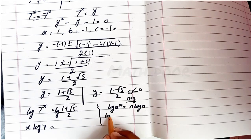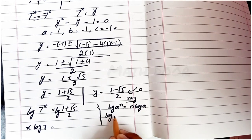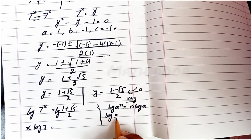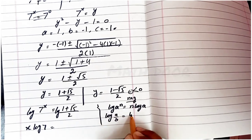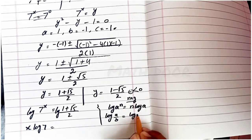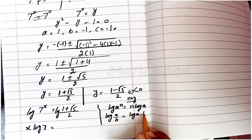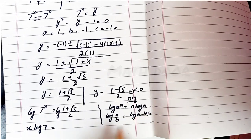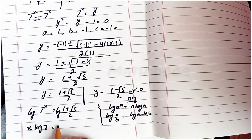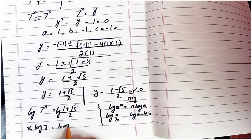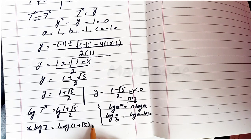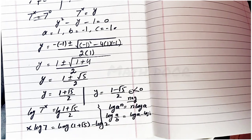We also apply the logarithmic quotient rule: log(a over b) equals log a minus log b. Applying this to the right-hand side gives: log(1 plus square root of 5) minus log 2.